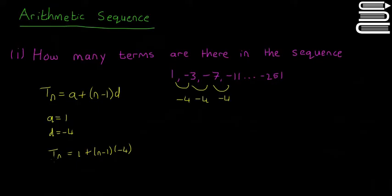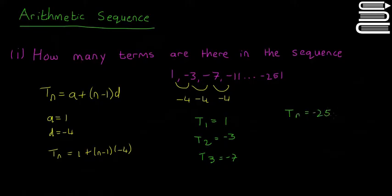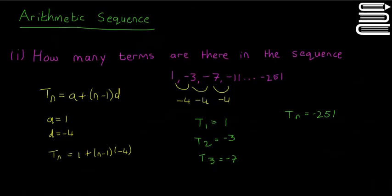So t(n), depending on what number you give n, will give you one of the terms. For example, t(1) should give 1, t(2) should give minus 3, t(3) should give minus 7, and so on. What we need to do now is set t(n) equal to minus 251 and find what n is, because we'll get a whole number answer telling us exactly which term it is in the sequence.